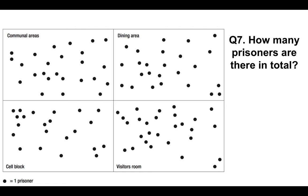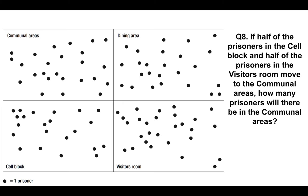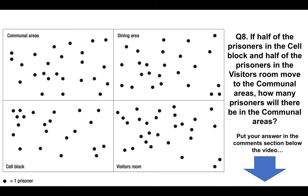Question seven: how many prisoners are there in total? Add up all four areas and put your answer in the comments section below. Question eight — a more tricky one. If half of the prisoners in the cell block (bottom left) and half of the prisoners in the visitors room (bottom right) move to the communal areas (top left), how many prisoners will there be in the communal areas? Pause the video, work out the answer, and post it in the comments.